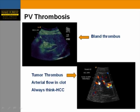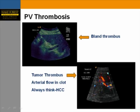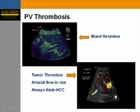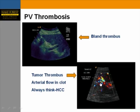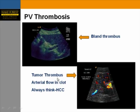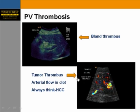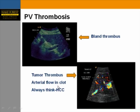Comparing that to another example: the portal vein is very expanded, barely distinguishable from the liver parenchyma, with an arterial signal within the clot — raising suspicion for tumor thrombus. In any cirrhotic patient with a tumor thrombus, always think about hepatocellular carcinoma.